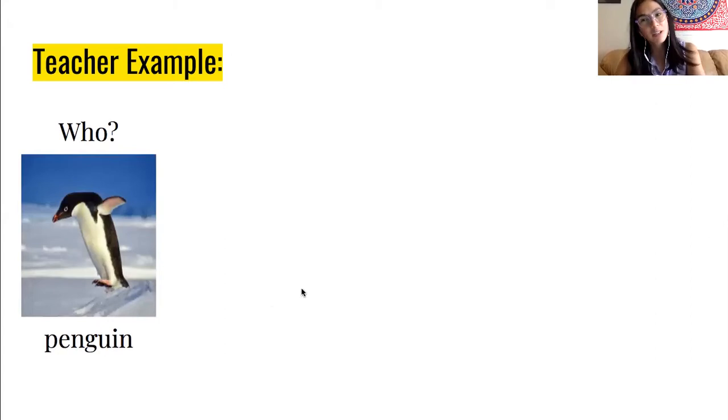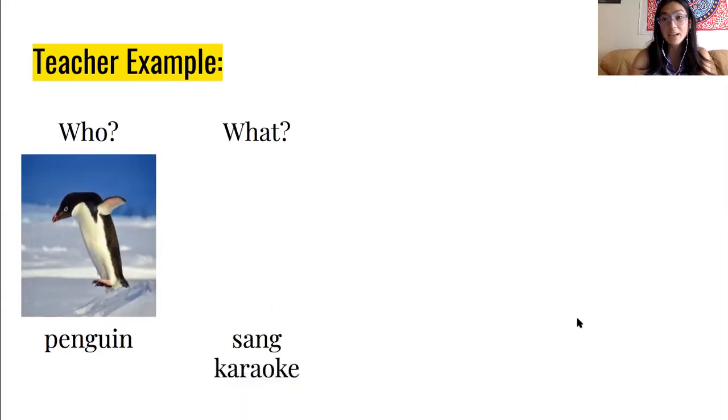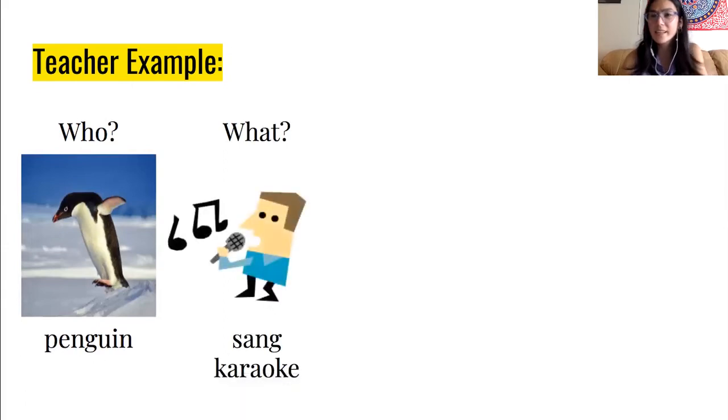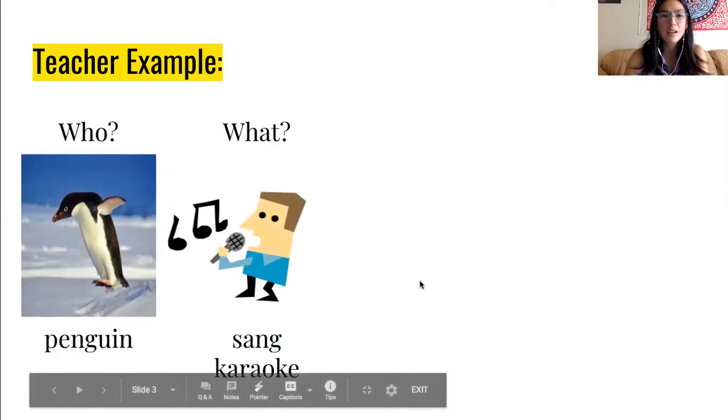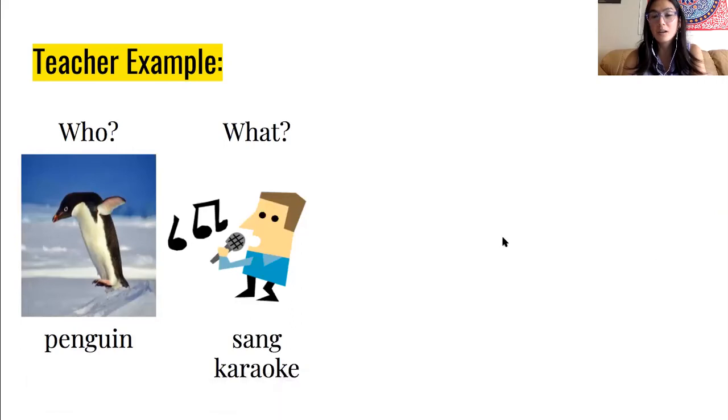And this is not a realistic fiction story writers. You can make this sentence as silly as you want. So I'm going to pretend that my penguin, my animal, is singing karaoke. My penguin, that's my who, and my what or the action my penguin is doing is she sang karaoke. I don't know where she got access to a microphone in Antarctica, but she did.